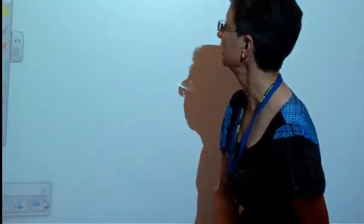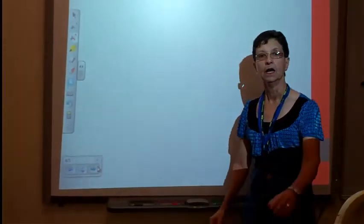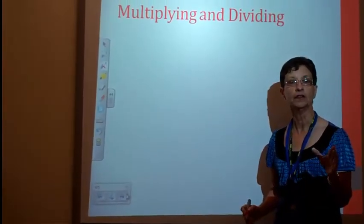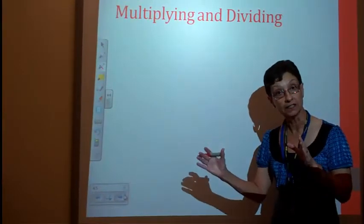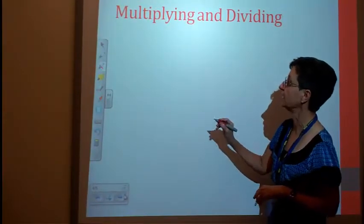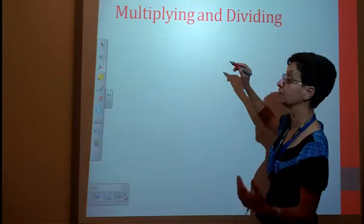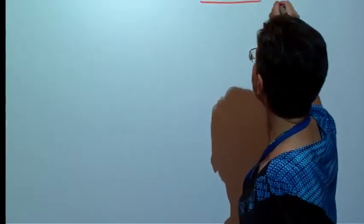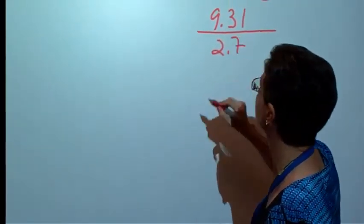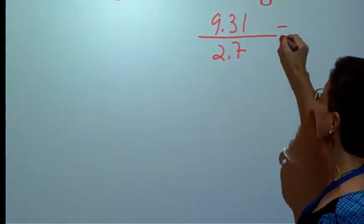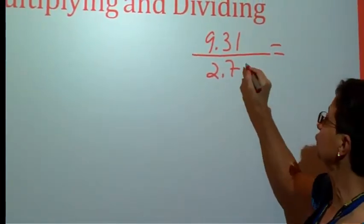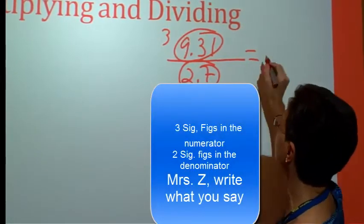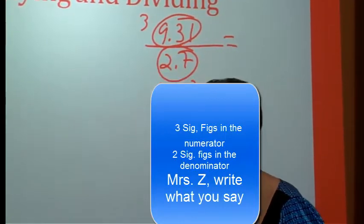Moving right along to multiplying and dividing. Here, we're going to round to the least number of significant figures. A little different, significant figures this time. If I have a calculation that involves 9.31 divided by 2.7, my answer will round to two significant figures. There are two significant figures here. There are three significant figures here. Therefore, my answer will be to two significant figures.